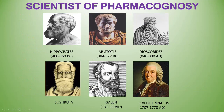The scientists in this field include: Hippocrates, Aristotle, Dioscorides, Linnaeus, Pudelineus, Galen — who is the first pharmacist — and Shushrita, who worked on the Ayurvedic system and herbs.